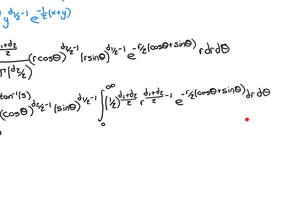The factor (cos θ + sin θ) looks complicated but is just a constant with respect to the r-integration. Over our domain for theta, from 0 to arctan(s), which is less than π/2, both cos and sin are non-negative, and when one equals zero the other does not. So their sum is always a strictly positive real number, meaning this constant is well-behaved.